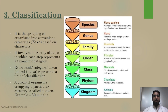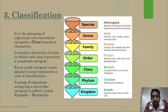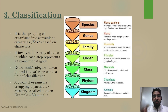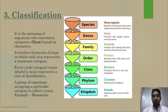Classification is the grouping of organisms into convenient categories or taxa, based on their characters. It involves a hierarchy of steps in which each step represents a taxonomic category. From the bottom we have kingdom — the biggest taxon — followed by phylum, class, order, family, genus, and species. Species is the smallest taxonomic category.